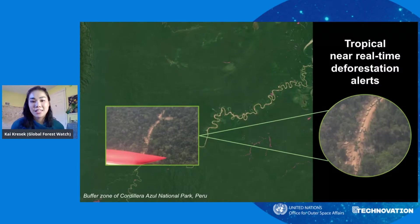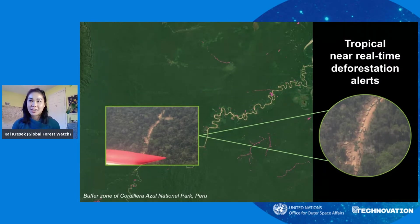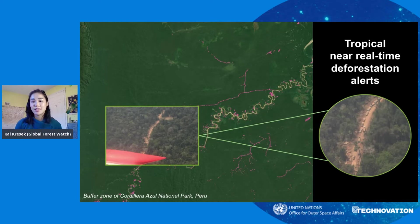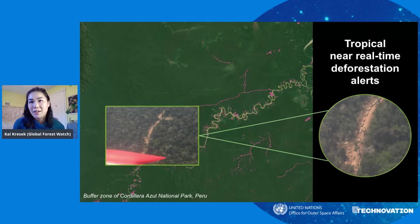This map shows our second main Global Forest Watch dataset, which focuses on tropical forests like the Amazon rainforest. This dataset shows deforestation occurring in near real time, meaning that we update the dataset on a very frequent basis — in this case, weekly. This enables us to detect forest change almost immediately after it happens.